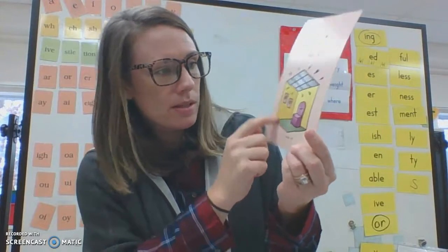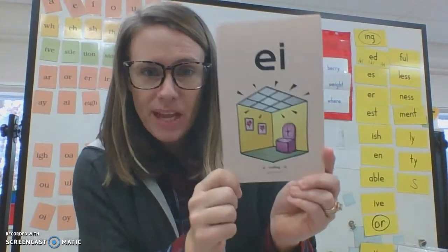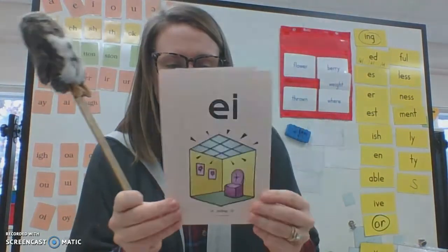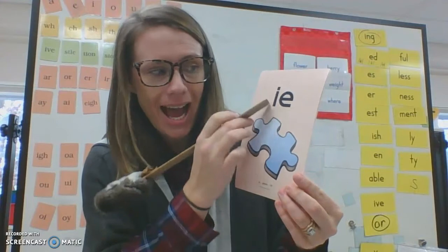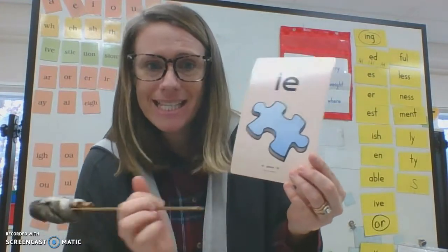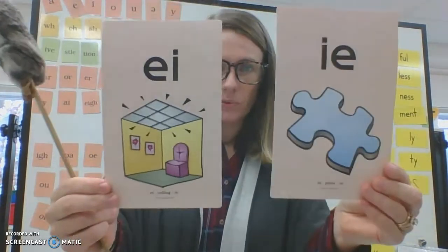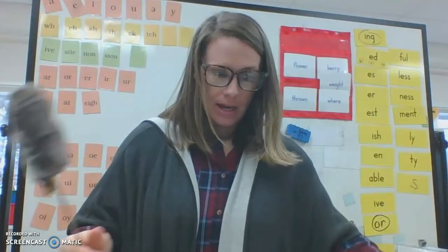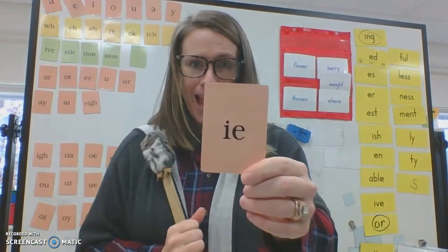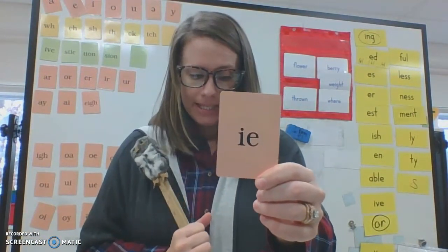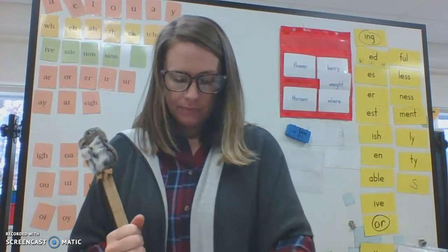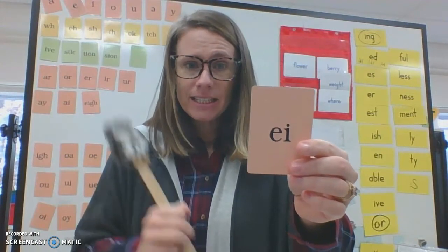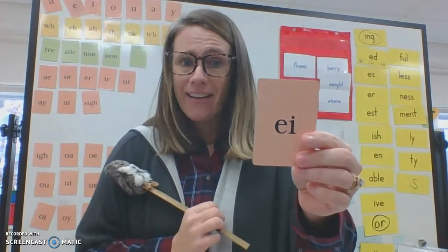These pictures, see this house? And here's the ceiling up there. Repeat after me. E-I, ceiling, E. And our next keyword, we said I-E, piece E. It's a puzzle piece. So really get a good look at those. And now let's try it with the standard cards. I-E, piece E. Repeat after me. E-I, ceiling, E. E-I, vein, A.